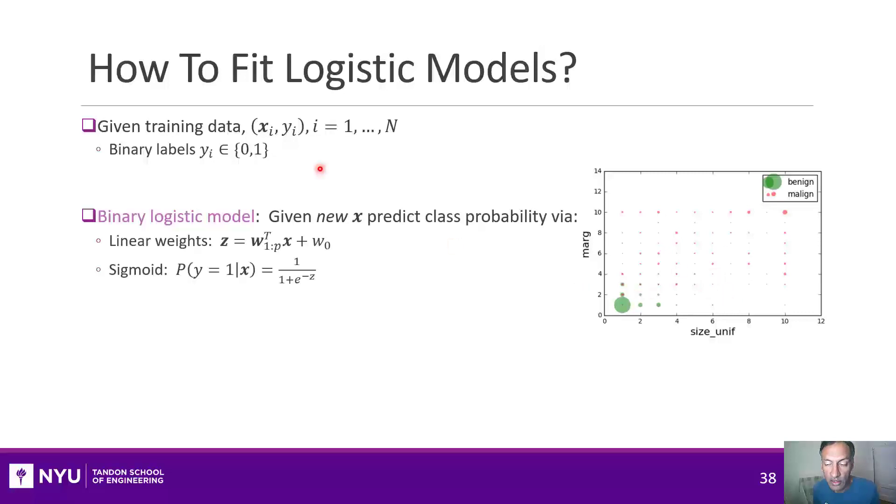Now, what we were talking about in the previous section was that we wanted to fit a logistic model. And a logistic model just means that if I have a new sample x, I'm going to predict its probability of being in a class by doing two things. I take a linear combination of the features, and it gives a scalar z. And then from that z, I compute its probability.